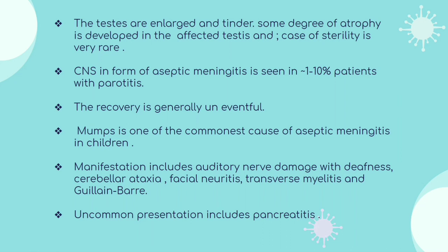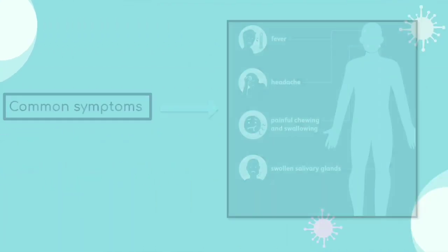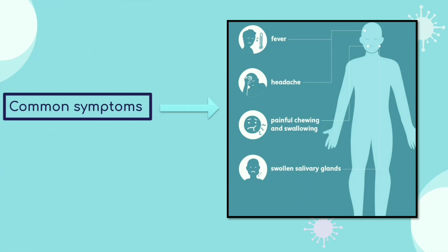Mumps is one of the common causes of aseptic meningitis in children. Manifestations include auditory nerve damage with deafness, cerebral ataxia, facial neuritis, transverse myelitis and Guillain-Barré syndrome. Uncommon presentations include pancreatitis. Three key common symptoms are: headache, painful chewing and swallowing, and swollen salivary glands.